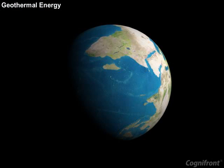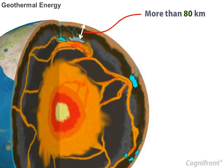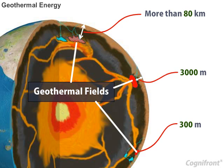Geothermal energy is the heat energy acquired by the earth. Here the source of the heat is earth, hence the name is geothermal. Heat inside the earth is available at a depth of more than 80 kilometers. In some locations it is available at a depth from 300 to 3000 meters. Such locations are referred to as geothermal fields.